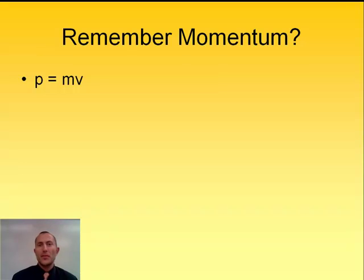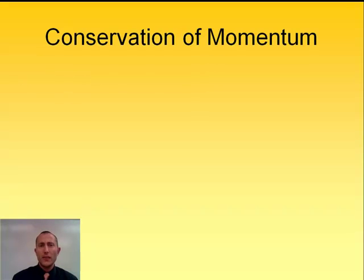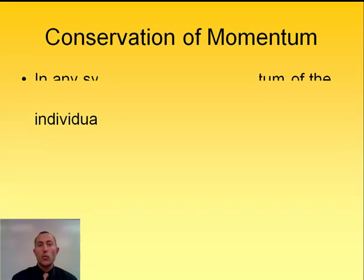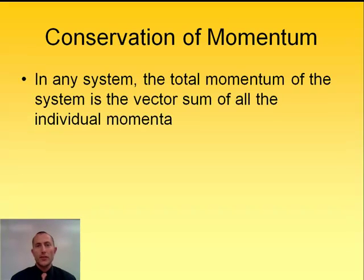If you remember, momentum is that quantity that we use to address an object's mass and velocity. The momentum of an object equals mass times velocity, so it's fairly easy to find an object's momentum. We should remember that momentum is one of our perfectly conserved quantities, so in any particular system, the momentum of that system is going to be conserved no matter what.